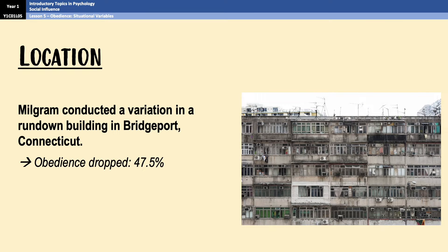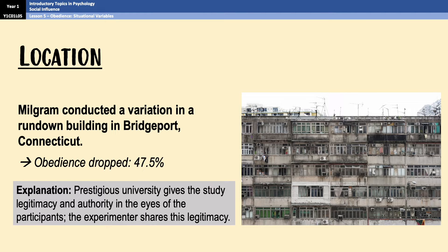The first variation is the change of location. Originally, Milgram conducted his experiment at Yale University — a very prestigious location, well known and respected in academic circles. In the location variation, Milgram moved his experiment to a rundown office block, and in that scenario obedience levels dropped from the original 65% to 47.5%. That's thought to be due to the university setting giving the study legitimacy and authority. Participants were more obedient at Yale because they perceived that the experimenter shared the legitimacy and that obedience was expected. However, obedience levels were still quite high in the office block because participants were aware of the scientific nature of the procedure and the researcher — an authority figure — was also present.